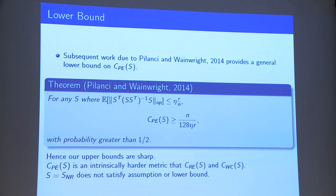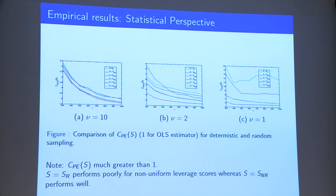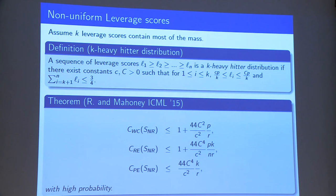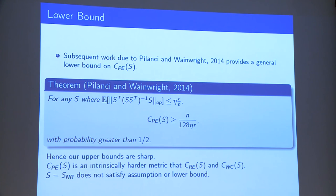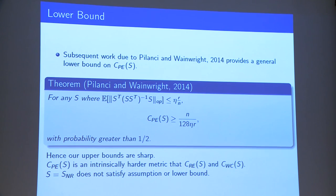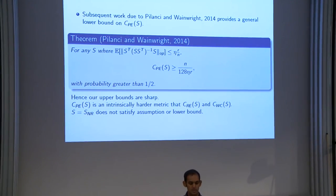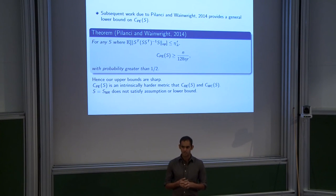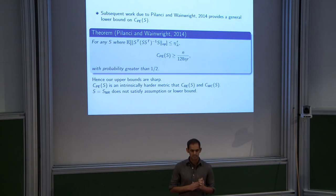What Pilanci and Wainwright's work also suggests is that doing one sketch of your data when doing ordinary least squares is not enough if you want to do well in terms of the statistical metric. If you do iterative sketching schemes — which is computationally more intensive because you're taking more and more sketches — then you can potentially get the original (1 + delta) type bound that you want. So one sketch isn't enough when you're interested in prediction efficiency.